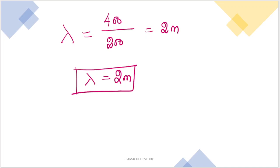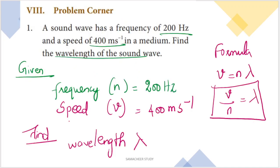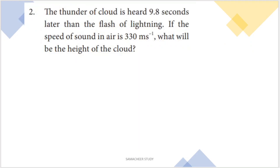So the answer is lambda equal to 2 meters. This is a very simple question — just solve using the formula lambda = v divided by n. Now, the second question: The thunder of a cloud is heard 9.8 seconds later than the flash of lightning.